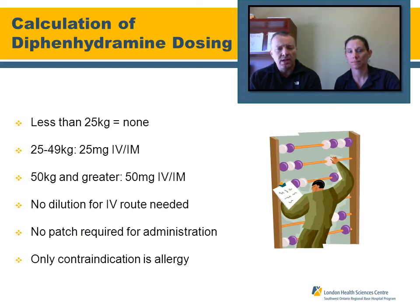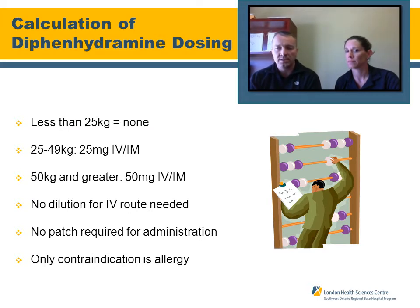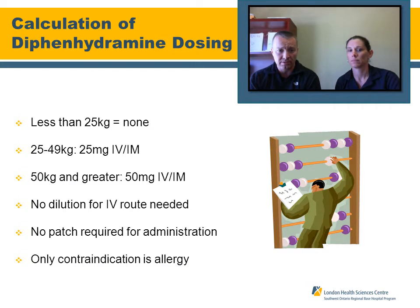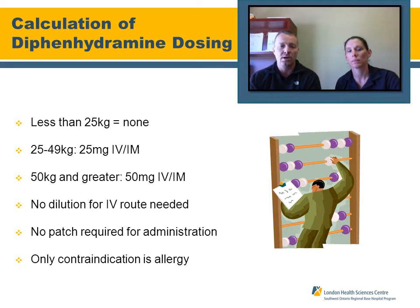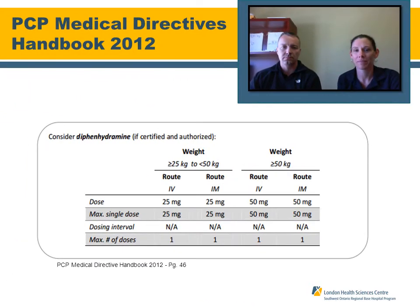For dosing diphenhydramine: for both primary care and advanced care paramedics, patients less than 25 kilograms — no dose, as there is no significant clinical evidence to support it. Between 25 and 49 kilograms: 25 milligrams IV or IM. 50 kilograms and greater: 50 milligrams IV or IM. No dilution is required, no patch is required, and the only contraindication is allergy or sensitivity to the drug. A reference chart is available directly in your handbook.